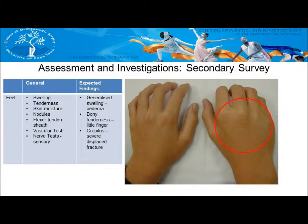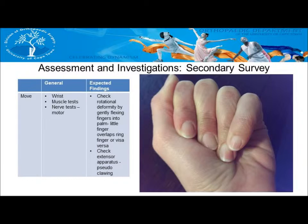On feeling, one will notice generalized swelling, bony tenderness over the little finger, and crepitus if there is a severely displaced fracture. On moving, you would check for rotational deformity by gently flexing the fingers into the palm. If the little finger overlaps the ring finger or vice versa, there is a rotational deformity.